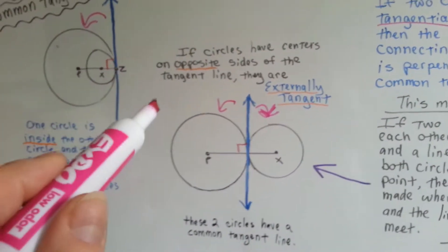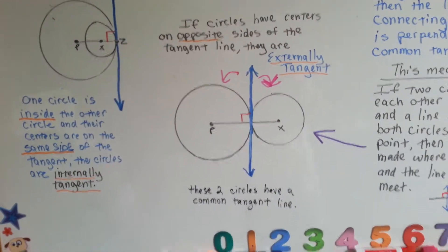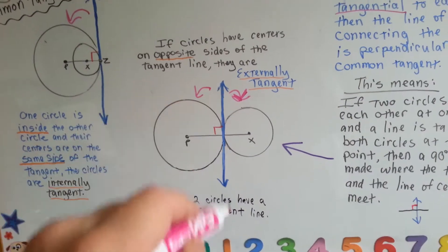If circles have centers on opposite sides of the tangent line, they are externally tangent. They have this common tangent line.